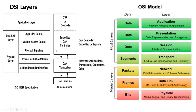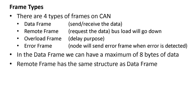The OSI layer of CAN according to ISO looks like this. The CAN transceiver covers part of the physical layer. The CAN controller covers the physical signaling and the data link layer. The application layer is partly in the controller and partly in the software.